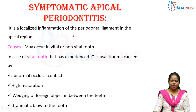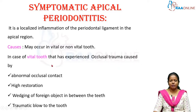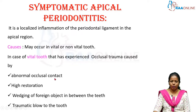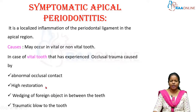Symptomatic apical periodontitis is defined as localized inflammation of the periodontal ligament in the apical region, with symptoms present. It can occur in a vital or non-vital tooth. In a vital tooth it occurs due to occlusal trauma from abnormal occlusal contact or a high restoration that has not been established with proper occlusal contact, causing the patient to return after two to three days.